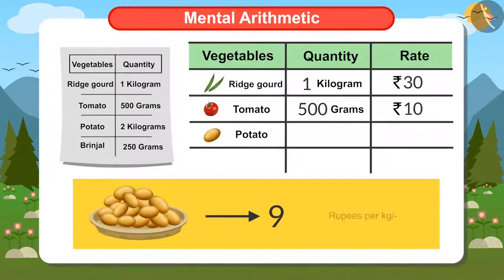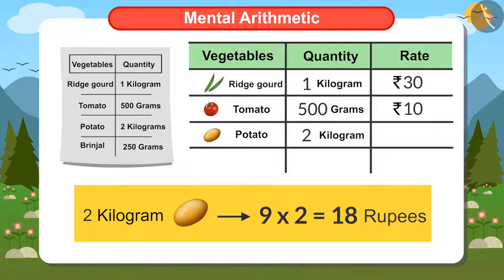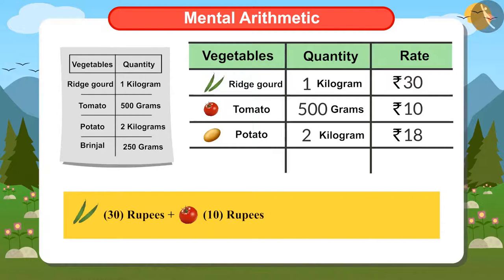Potatoes are 9 rupees a kilo, and I have bought 2 kilos of potatoes. To find the cost of 2 kilos of potatoes, I have to multiply 9 by 2. Nine 2s are 18, so I have to pay 18 rupees for potatoes. Adding this to the price of ridge guard and tomato, the answer is 58 rupees.